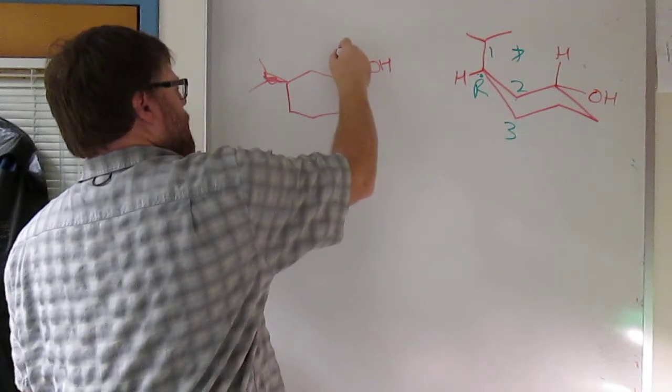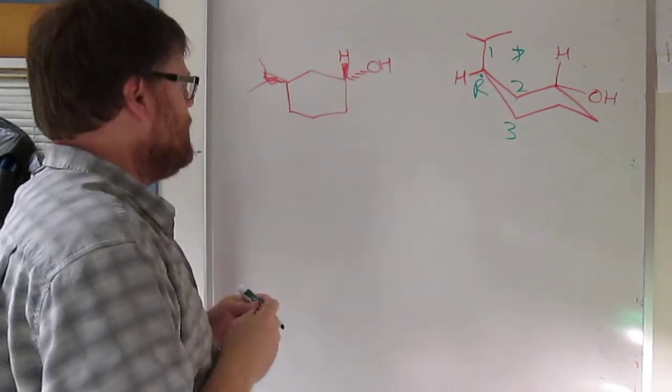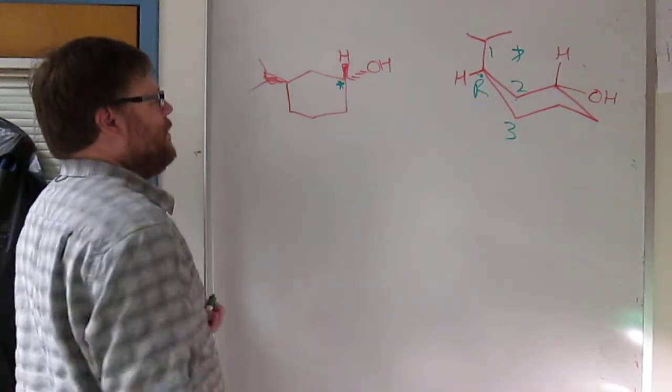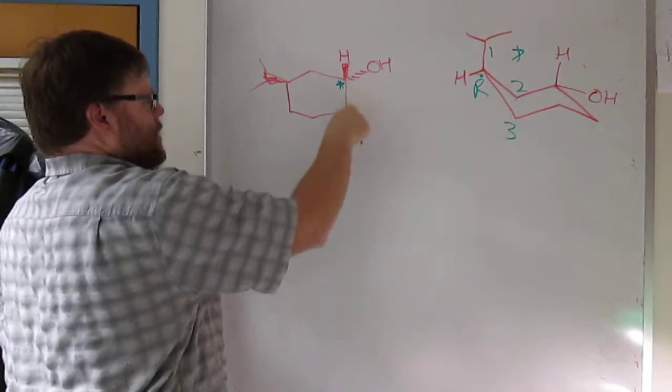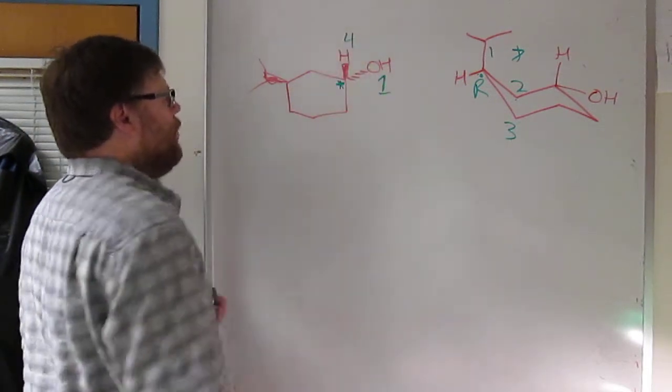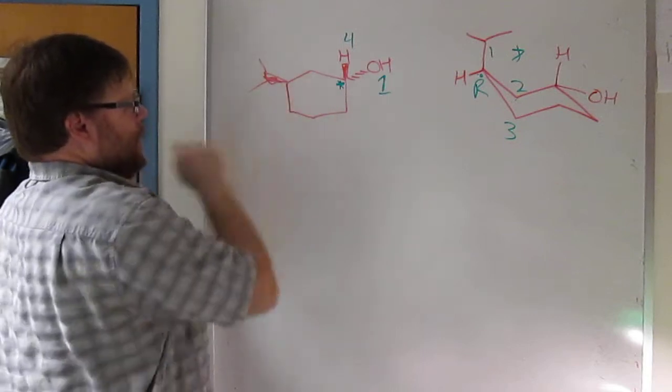Go ahead and put your, I'm going to draw in now the wedged, the H that's coming out at us. Now do priorities. So again, this is the chiral carbon we're considering. Oxygen, carbon, carbon, H. Oxygen is clearly number one. H is clearly number four.